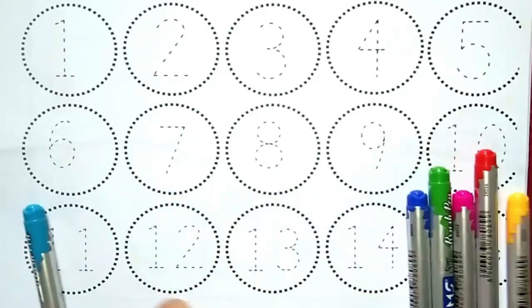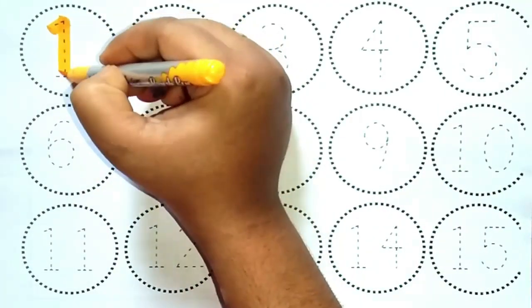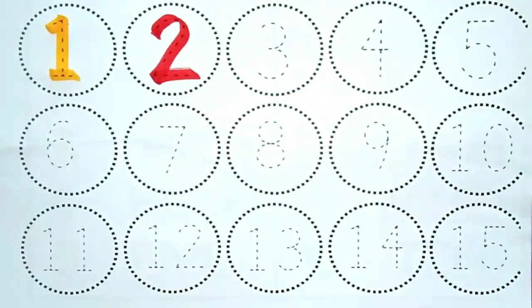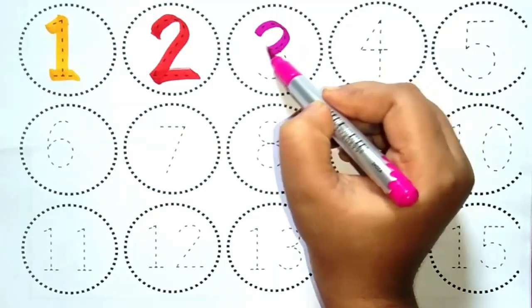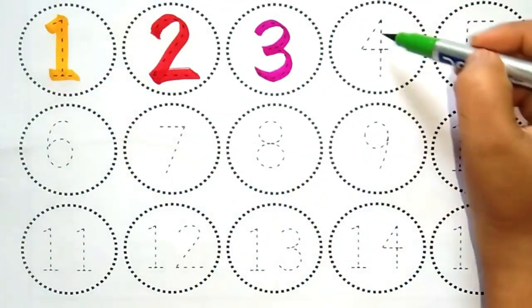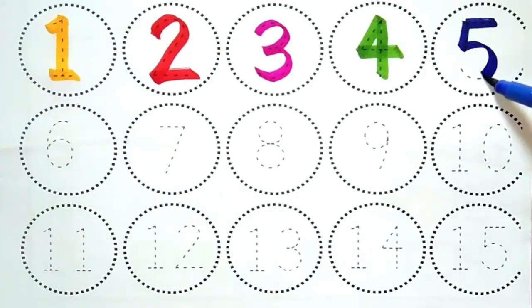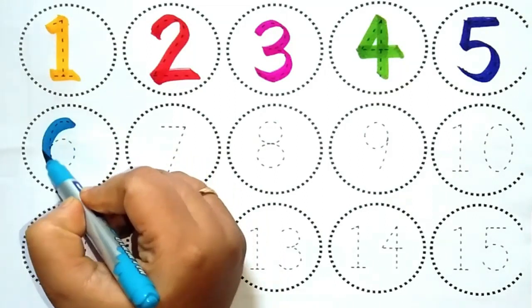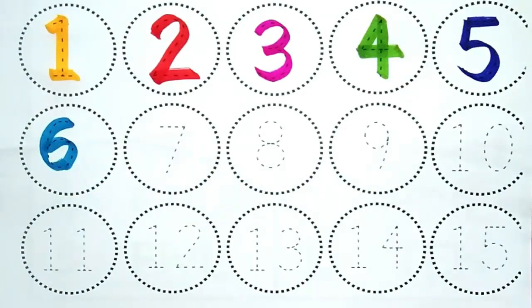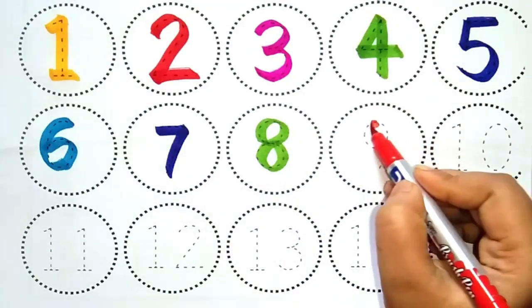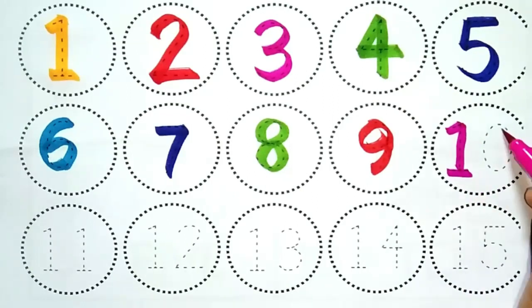One, yeh hai Number One. Two, yeh hai Number Two. Three, yeh hai Number Three. Four, Four, yeh hai Number Four. Five, yeh Number Five. Six, yeh Number Six. Seven, yeh Number Seven. Eight, yeh Number Eight. Nine, yeh Number Nine. Ten, Ten, yeh hai Number Ten.